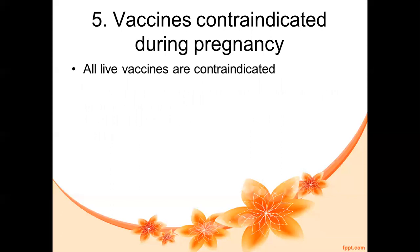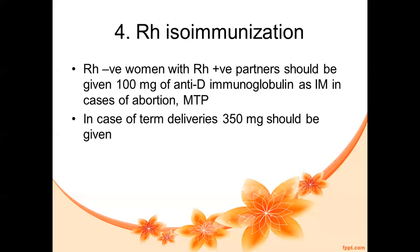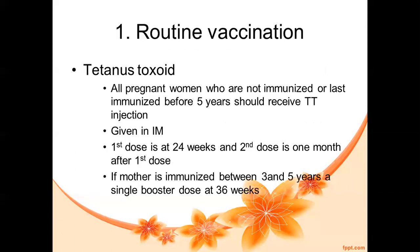Vaccines which are contraindicated during pregnancy include all live vaccines such as measles, mumps, rubella, and varicella (chickenpox). The only vaccine which is safe as routine during pregnancy is tetanus toxoid, given at 24 to 27 weeks for the first dose and one month later for the second dose.